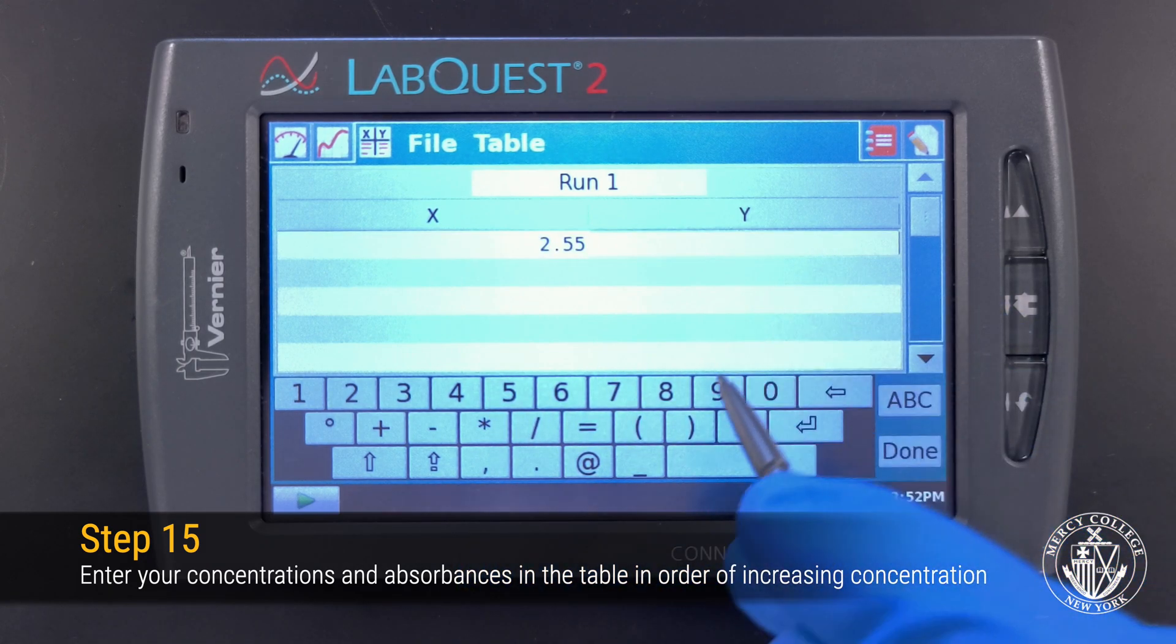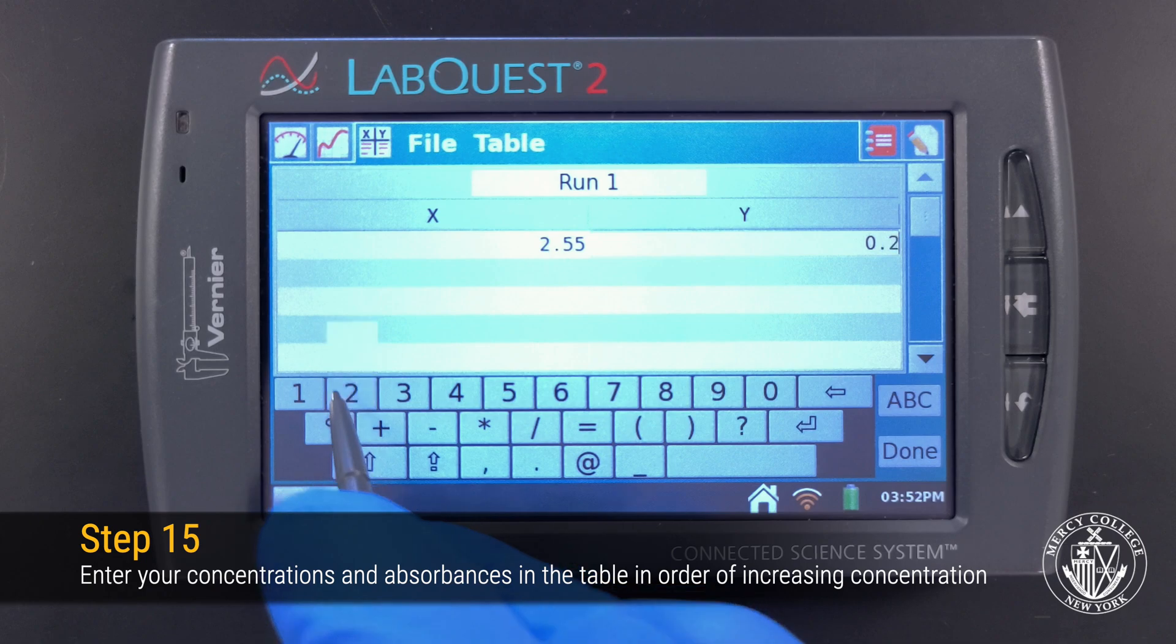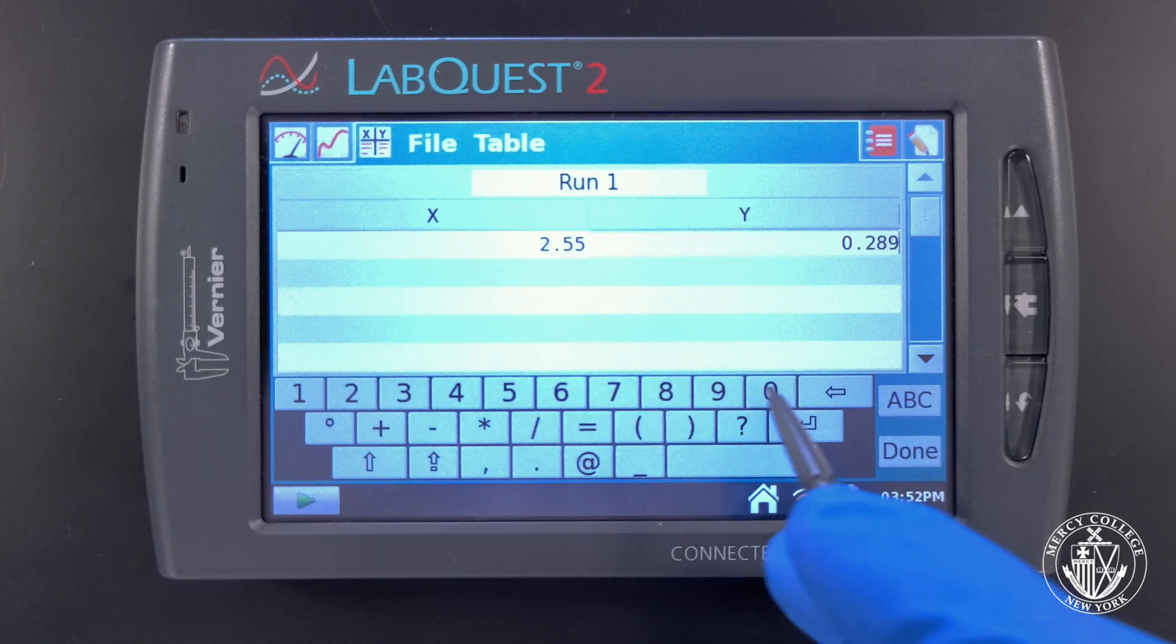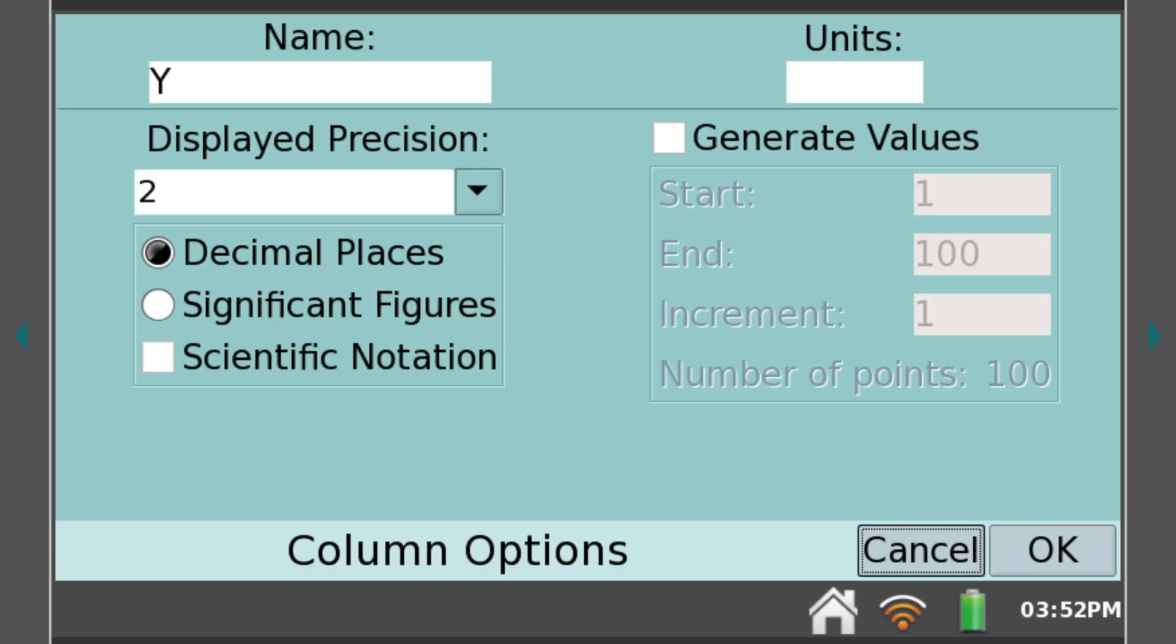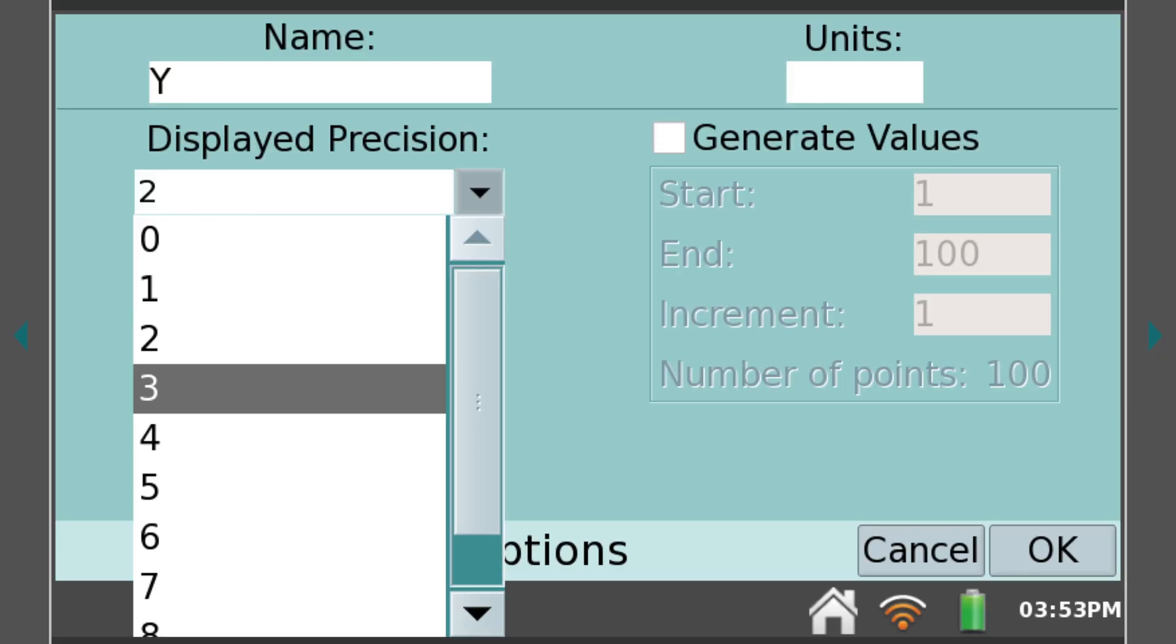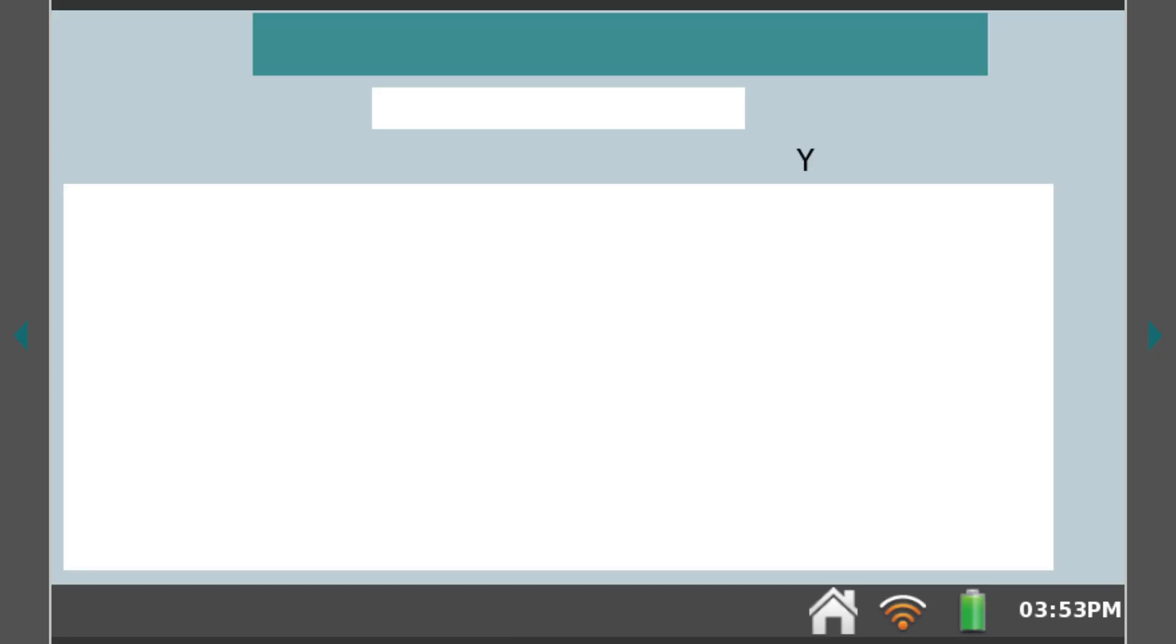If the LabQuest doesn't display all of the digits that you type, you can tap the column header to change the number of digits displayed. Under Displayed Precision, select the number of digits you would like displayed and click OK.